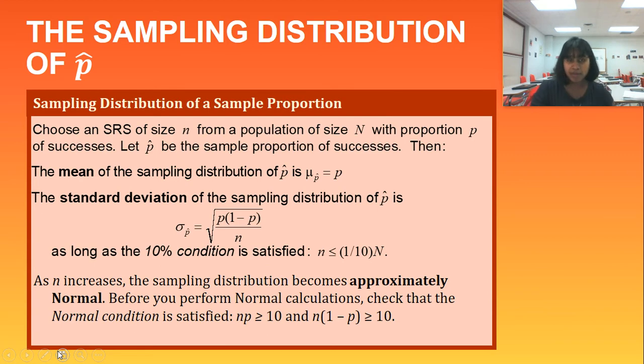So if I'm talking about sampling distributions of a sample proportion, we can summarize all that information. When we choose an SRS of size n from a population with proportion of p being your successes, then we can let p-hat be the sample proportion of successes. So if it follows all of those rules, then our mean of the sampling distribution is simply p-hat. So your mu value is equivalent to your p-hat value. And that's because you have that unbiased estimator. And your standard deviation is equivalent to this formula. But again, you have to meet the 10% condition, a.k.a. your sample is no greater than 10% of the population.